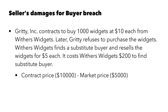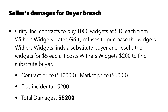In that case, the contract price is $10,000 — that's what Withers Widgets would have received from Gritty Inc. The market price is $5,000, because Withers Widgets is only able to resell the widgets for $5 each. Plus the incidental damages — the cost of mitigation. Withers Widgets has a duty to find another buyer, and it costs them $200 to find that substitute buyer. So the total damages are $5,200: the difference between contract price and market price, plus incidental.